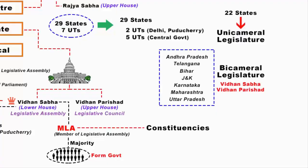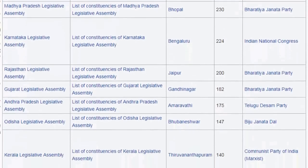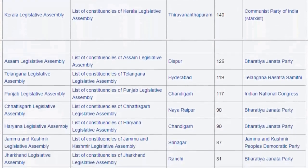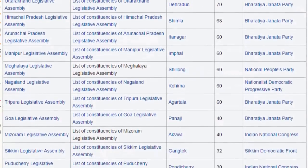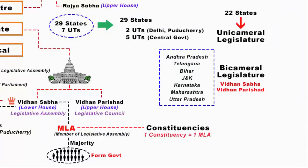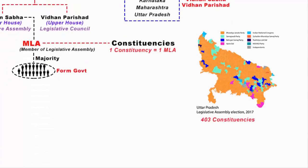States are divided into constituencies, and from each constituency, one MLA is elected. Various state and central political parties contest in each constituency for an MLA seat. The political party whose MLAs have won more than half the number of constituencies in a state can be said to be in a majority. For example, the UP Legislative Assembly has 403 constituencies, so if a political party wins in at least 203 constituencies, that party is declared the winner and will form the government at state level.